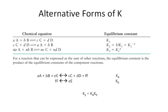If we switch the order of this reaction and write it in the opposite direction, starting with C moles of C plus D moles of D to give A moles of A and B moles of B, the value for the equilibrium constant would be different. That value would be the reciprocal of the original equilibrium constant K1.